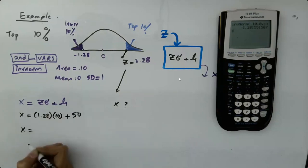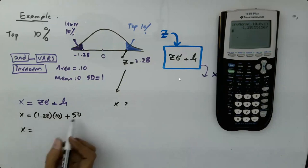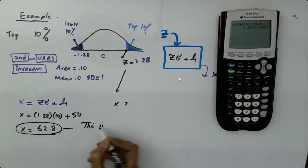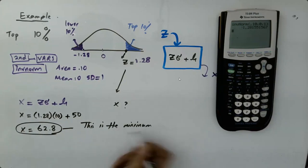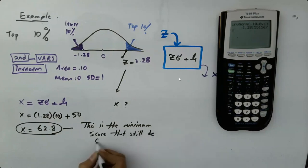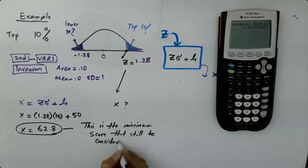It says the standard deviation is 10 and the mean is 50. So if you do the computation, if you just multiply these two numbers and add 50 to it, you get 62.8. So this is the minimum score that would still be considered for hiring.